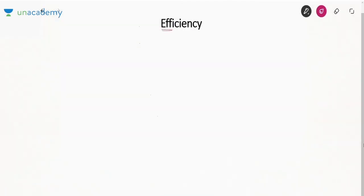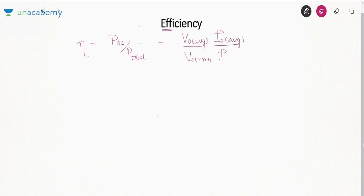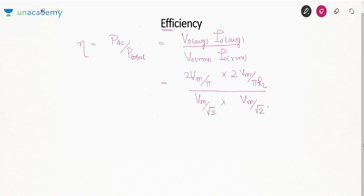Efficiency η = DC output power / total power = (V0_avg · I0_avg) / (V0_rms · I0_rms). Substituting: V0_avg = 2Vm/π, I0_avg = 2Vm/(π·Rl), V0_rms = Vm/√2, I0_rms = Vm/(√2·Rl). After cancellation, η = 8/π² = 81.05%. This is the same as the center-tapped full wave rectifier, again because the waveform shapes are identical.